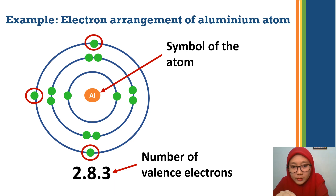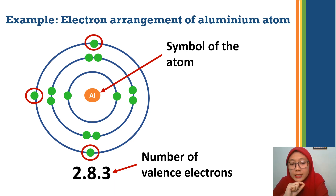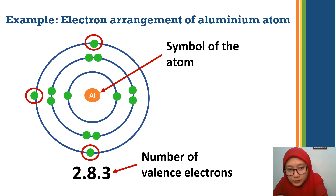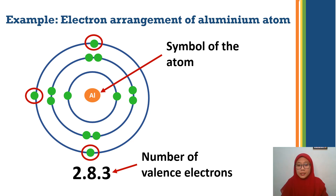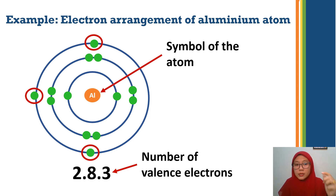The last number, three, is related to the number of valence electrons — the number of outer electrons, the electrons placed at the outer shell.